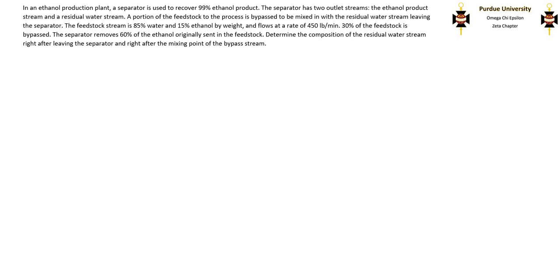I'm going to go through this example problem of a material balance on a single unit with a bypass stream. In an ethanol production plant, a separator is used to recover 99% ethanol product. The separator has two outlet streams: the ethanol product stream and a residual water stream. A portion of the feedstock is bypassed to be mixed with the residual water stream leaving the separator. The feedstock stream is 85% water and 15% ethanol by weight, and it flows at 450 pounds per minute.